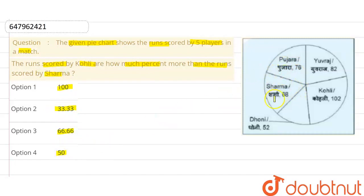Looking at the pie chart with 5 players, we need to find how much more Kohli scored compared to Sharma. From the chart, Kohli scored 102 runs and Sharma scored 68 runs. Now we need to calculate the required percentage.